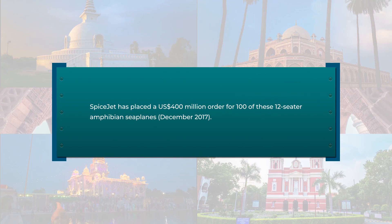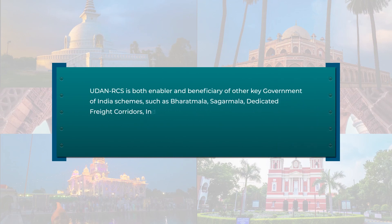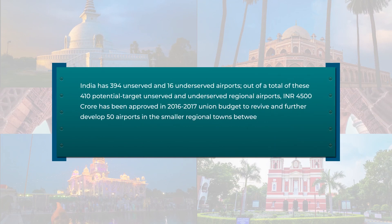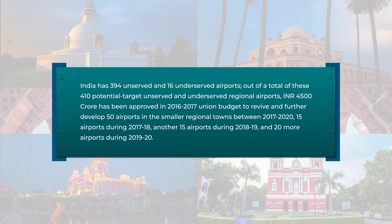SpiceJet has already placed a US$400 million order for 100 twelve-seater amphibian seaplanes in December 2017. UDAN RCS is both an enabler and beneficiary of other key Government of India schemes such as Bharatmala, Sagarmala, dedicated freight corridors, industrial corridors, BharatNet, Digital India, Make in India, National e-Governance Plans, Startup India, and Stand Up India. INR 4,500 crore was approved in the 2016–17 Union Budget to revive and develop 50 airports in smaller regional towns between 2017 and 2020.